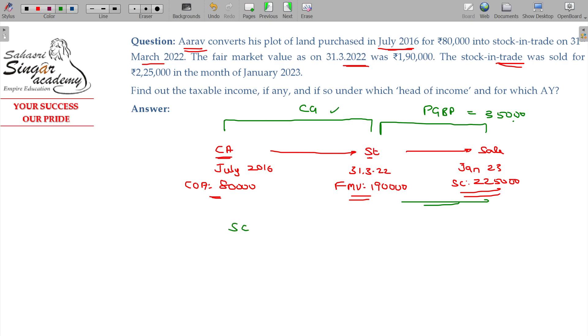For capital gains, sale consideration equals fair market value on the date of conversion: Rs. 1,90,000. The period of holding from 2016 to 2022 makes it a long-term capital asset, so indexed cost of acquisition applies.